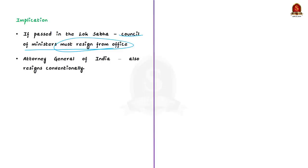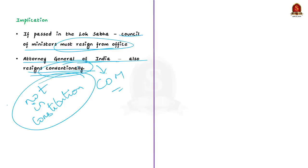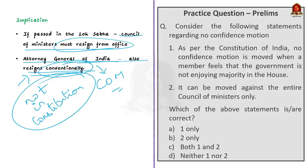Conventionally, the Attorney General of India resigns when the government resigns or is replaced, because he is appointed on the advice of the council of ministers with the Prime Minister as head. However, this provision is not in the Indian Constitution. As per the Constitution, he holds office during the pleasure of the President, meaning he may be removed by the President at any time. In this news article we saw about the no-confidence motion and its implications in India.